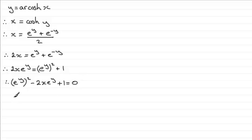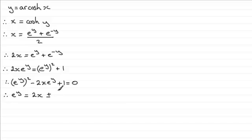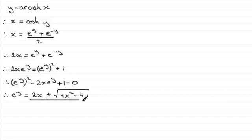Now I'm going to use the quadratic formula to solve this. So we have e to the y equals, taking a as 1, b as minus 2x, and c as 1: e to the y equals minus b, which is 2x, plus or minus the square root of b squared — that's (minus 2x) all squared, giving 4x squared — then minus 4 times a times c, which is just minus 4, all divided by 2.